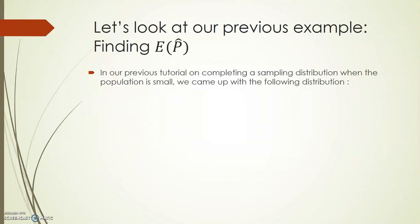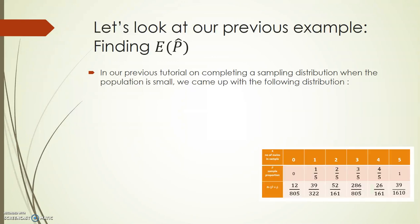Let's look at our previous example from a few tutorials ago, and let's find the expected value of p-hat and the standard deviation of p-hat for this distribution. Hopefully you'll remember this distribution from that question, and we're going to use this distribution to find mu and sigma.